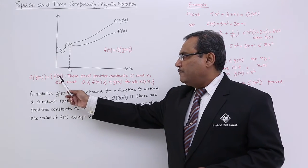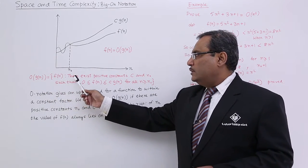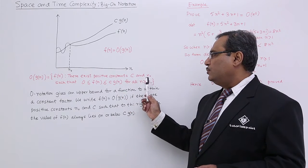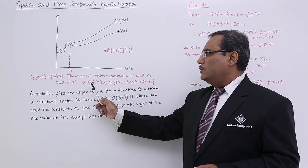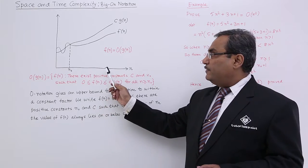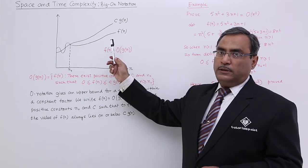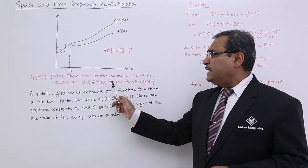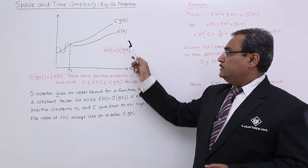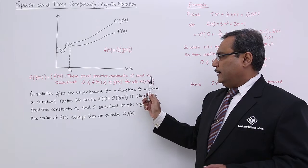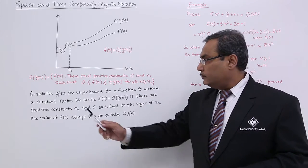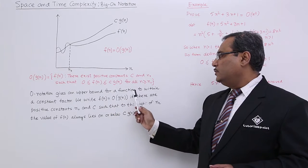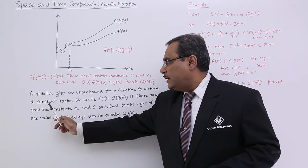Big O of g(n) equals f(n) if there exist positive constants c and n₀ such that 0 ≤ f(n) ≤ c·g(n) for all n greater than or equal to n₀. Big O notation gives an upper bound for a function to within a constant factor.